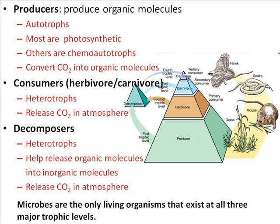The important point in microbiology is that microorganisms are the only living organisms that exist in all three major trophic levels: producers, consumers, and decomposers. The carbon molecules — since carbon is the basis of organic matter — will be recycled between the producers and the consumers. The fact that microorganisms are found in all three trophic levels is an attestment of the power these microorganisms have at maintaining the carbon cycle. Let's discuss carbon and its importance in nature.